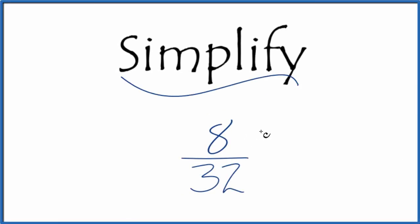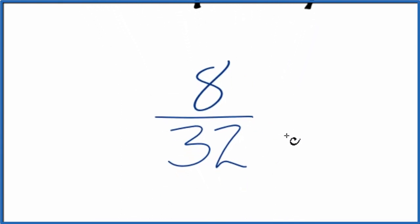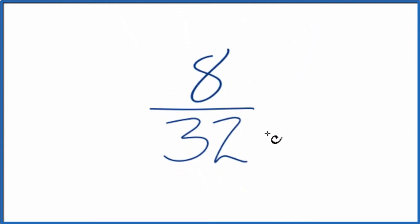If you're asked how to simplify the fraction 8/32, here's how you do it. We're looking for another fraction that's equal to 8 over 32. We call that an equivalent fraction.